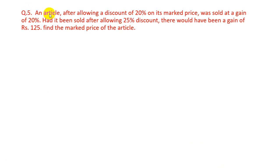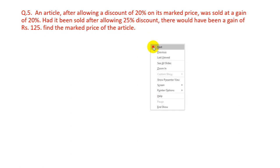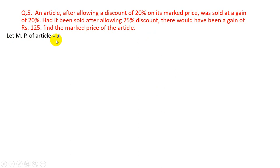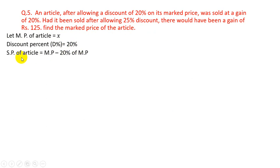Question number 5. An article after allowing a discount of 20% on its marked price was sold at a gain of 20%. Had it been sold after allowing 25% discount, there would have been a gain of Rs.125. Find the market price of the article. Let MP = X. Discount% = 20%, so SP = MP − 20% of MP = X − X/5 = 4X/5.